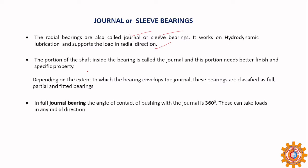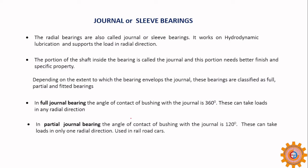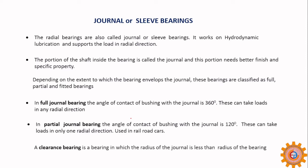In a full journal bearing, the angle of contact of the bushing with the journal is 360°. In a partial journal bearing, the angle of contact is 120°, and these are used in railroad cars. A clearance bearing is one in which the radius of the journal is less than the radius of the bearing — meaning there is a large clearance between bearing and journal. The part that accommodates the journal is called the bearing, and the part that rotates inside is called the journal, which is nothing but a shaft.